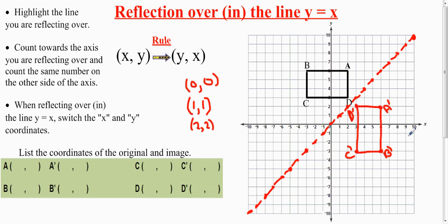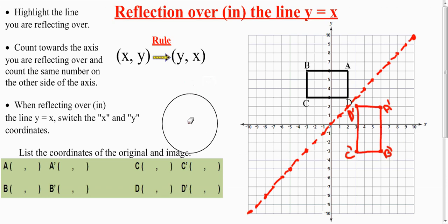So A goes to A prime, B goes to B prime, C goes to C prime, D goes to D prime — and that is your reflection. You can check it by folding on the reflection line and you'll see A matches A prime, B matches B prime, and so on. But the easiest way to do this reflection is not what I just did at all. The rule is simply that (x, y) becomes (y, x) — when reflecting over y equals x, you just switch the x and y coordinates.